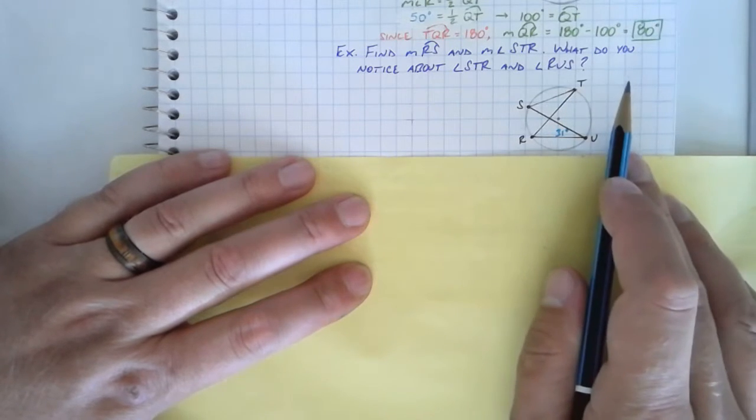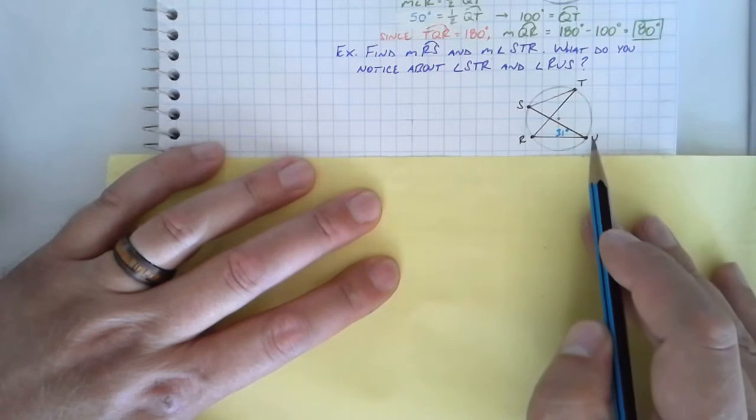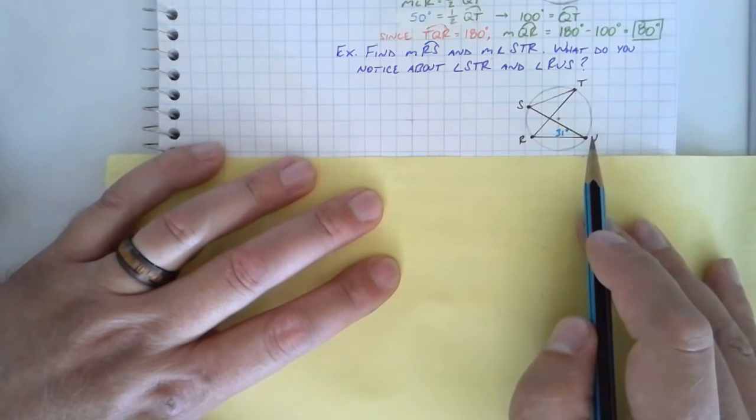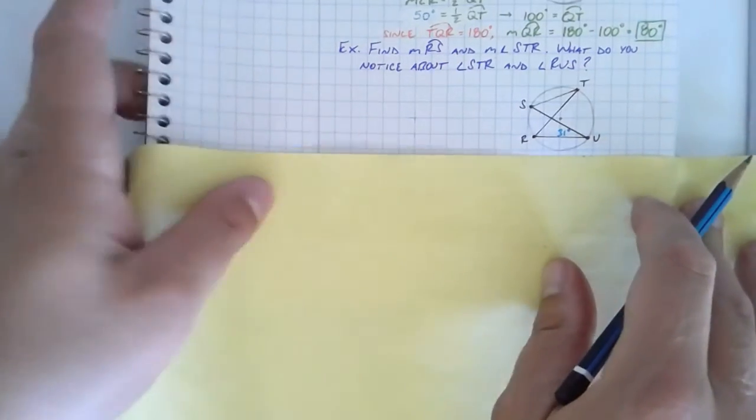And then the last question just asks me is more just an abstract one. What do you notice about angle T and angle U? We're going to find out that there's a relationship between these two. Maybe some of you can see it already. Alright. So let me jump to the whiteboard to blow this up a little bit, and we'll work through the solution really quickly on that.